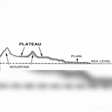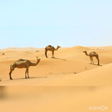Next we study deserts — also major geographical forms. What is a desert? A desert is dry land which receives little or no rainfall year after year. There are two main kinds of desert: hot deserts and cold deserts.